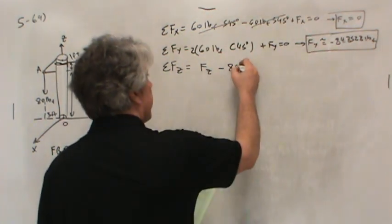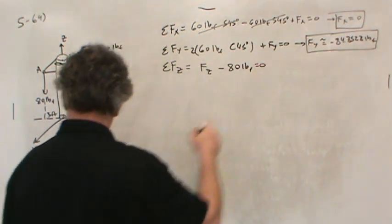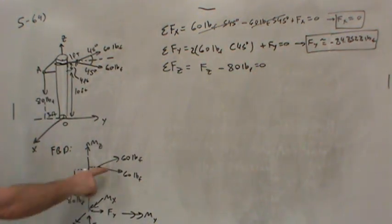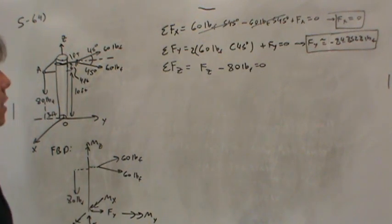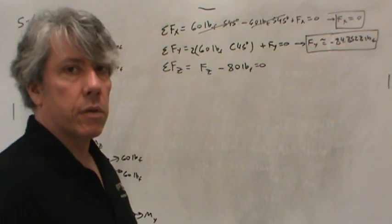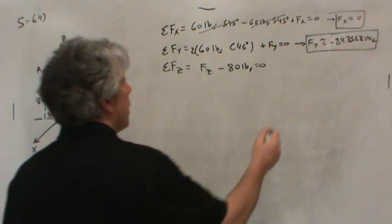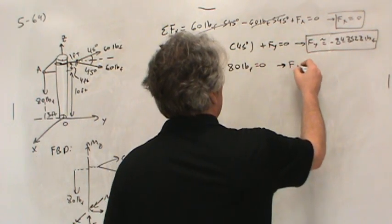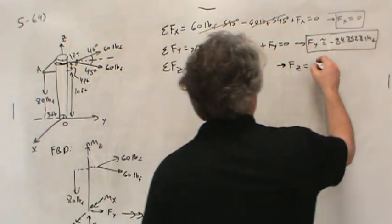There's a negative 80-pound force here at A, and that's it. The 60-pound forces have no component in the vertical direction, the Z direction. So, that's it. So, Fz is equal to 80 pounds.